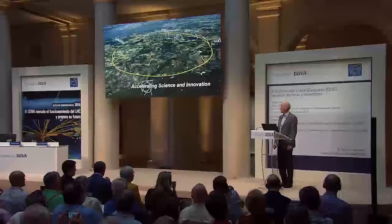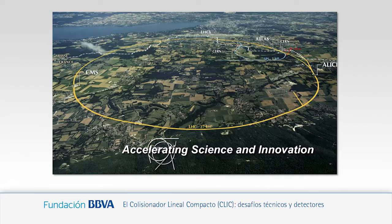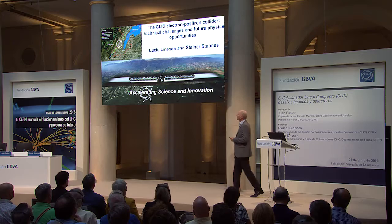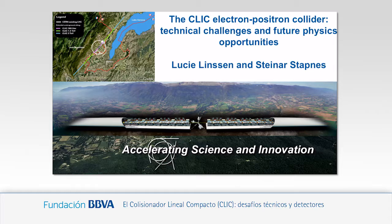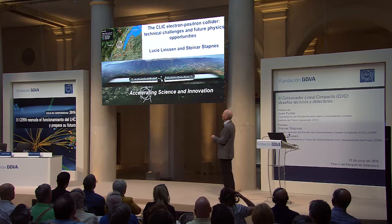Good evening everybody. The seminar today is about the Compact Linear Collider CLIC, one of the future projects being evaluated for potentially being implemented at CERN after the LHC. At CERN we are currently operating the LHC, a 27-kilometer circular collider. CLIC is a linear collider — you can see its footprint here with three different colors representing the three possible implementation stages, starting at roughly 10 kilometers and expanding over 25 years up to 50 kilometers total length.